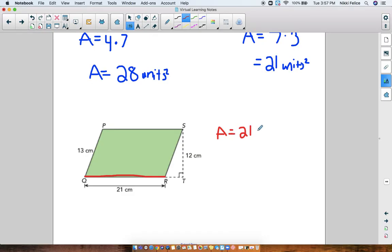So area is going to be base times height. And now the height. Is the height 13 or is it 12? It's 12. Remember the height goes straight up, not slanty. So be careful.